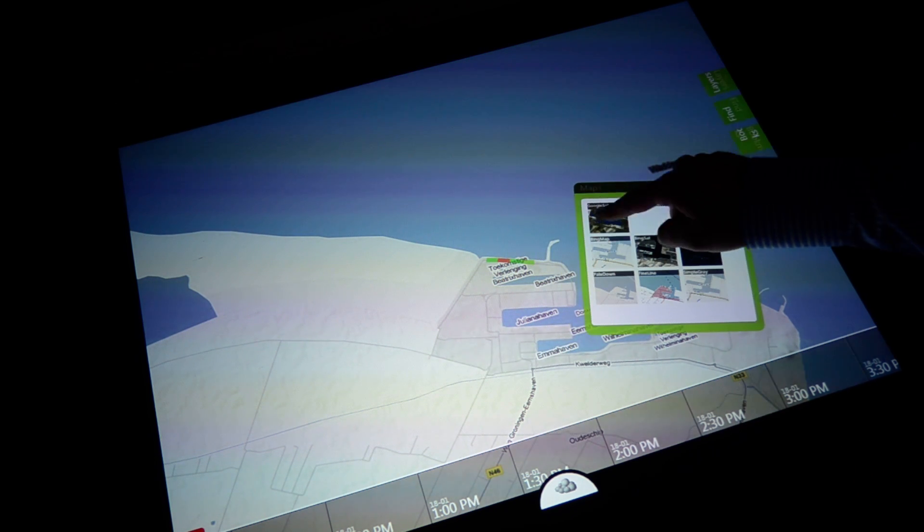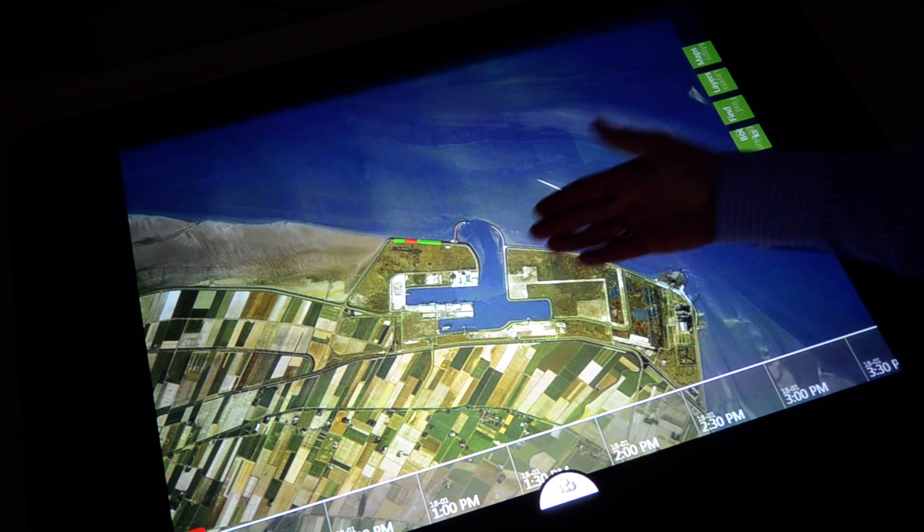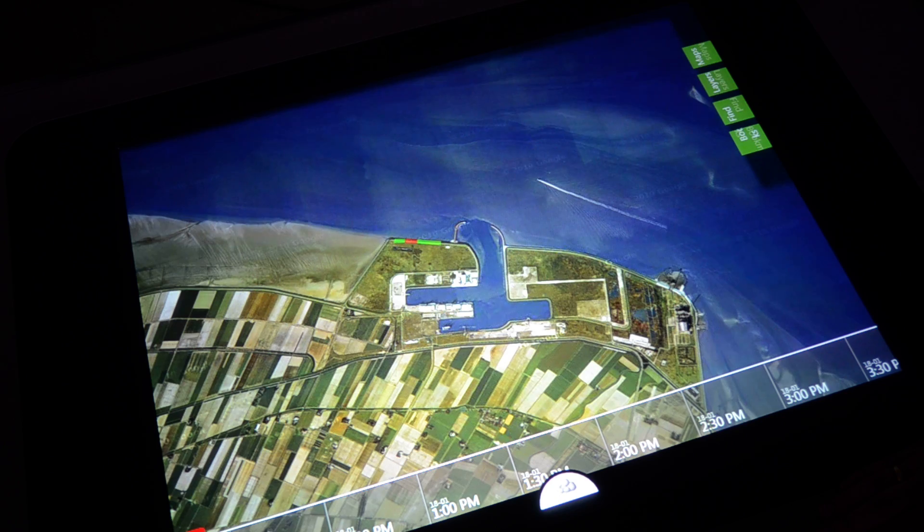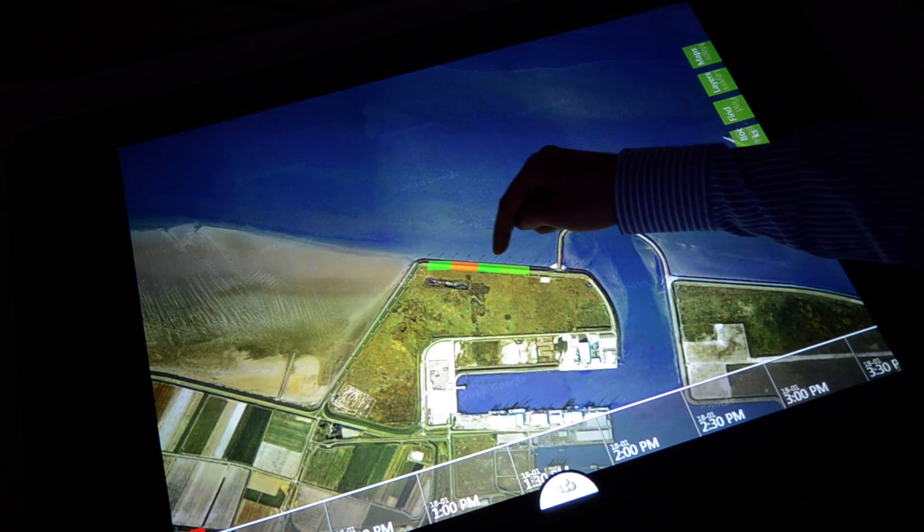And what I can do with the map is I can also change to satellite view. So you see here the location of the harbor, what the dike is protecting, and here I can zoom in to the dike itself. There are four sections.